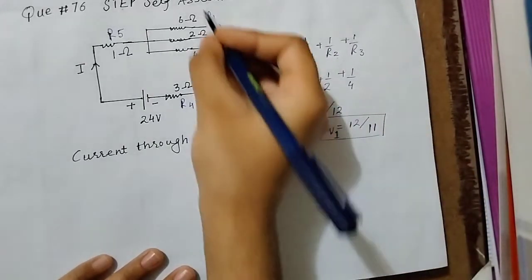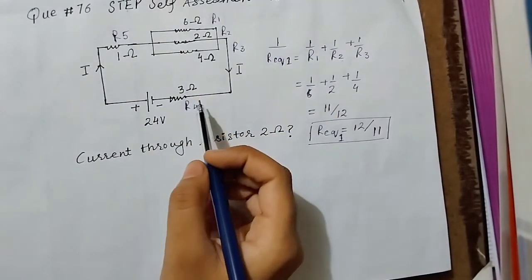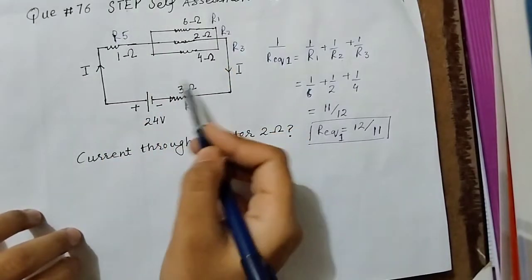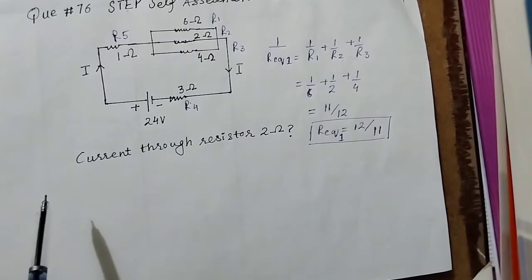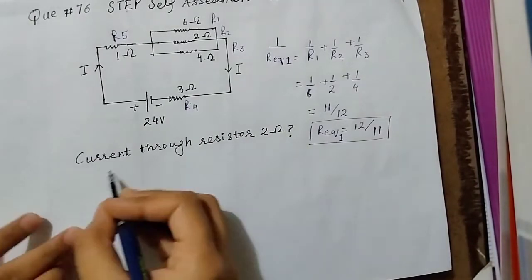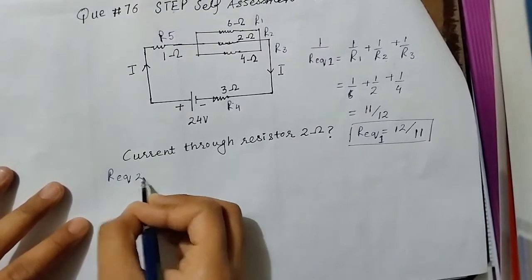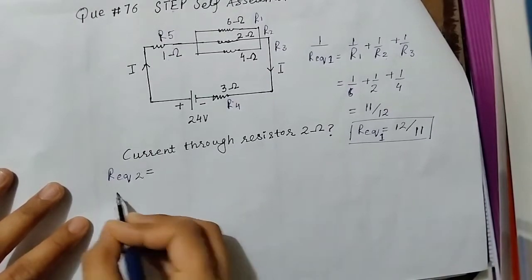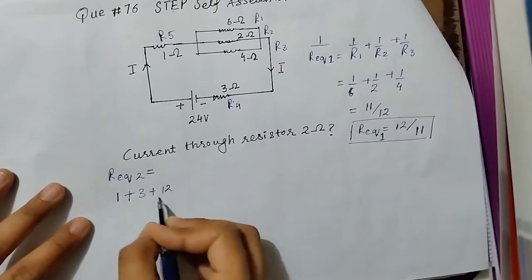These resistors are series connected, so we simply add them. If we write the equivalent resistance of the whole circuit, this will be 1 plus 3 plus 12 over 11.